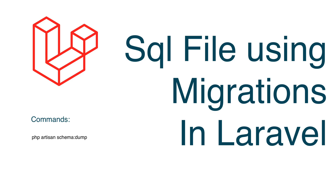To summarize: using `php artisan schema:dump` you can create a SQL file containing all CREATE TABLE commands from your migrations. If you want to delete migration files after creating the SQL file, use the `--prune` option. The advantage is that when you migrate, the SQL file is executed first, then any new migrations run. You can also use the `--database` option to specify your database.